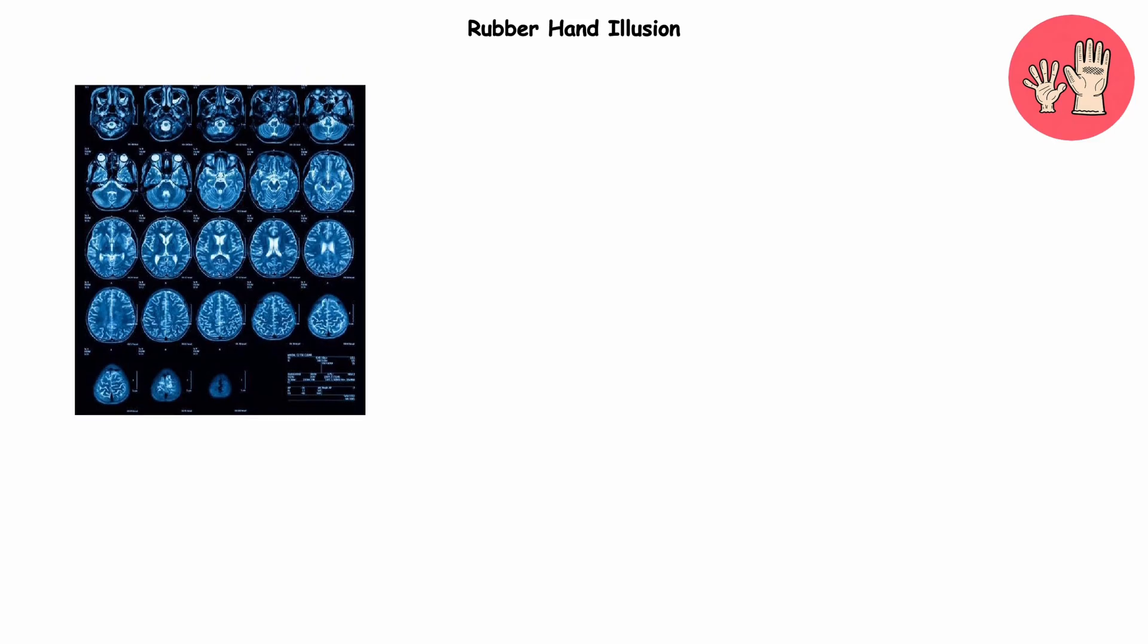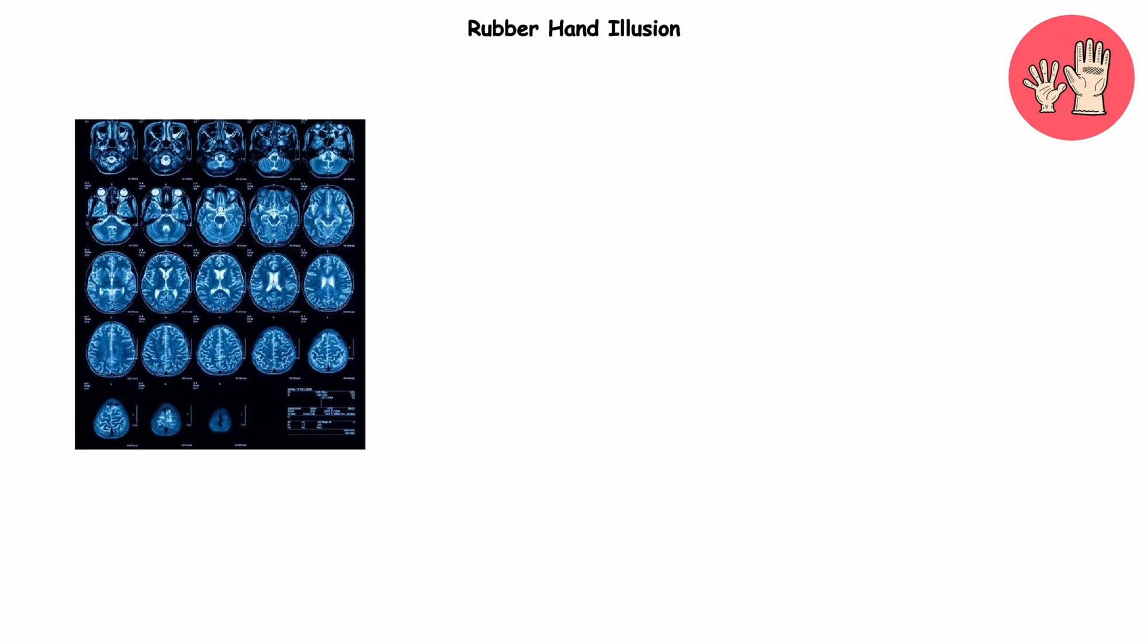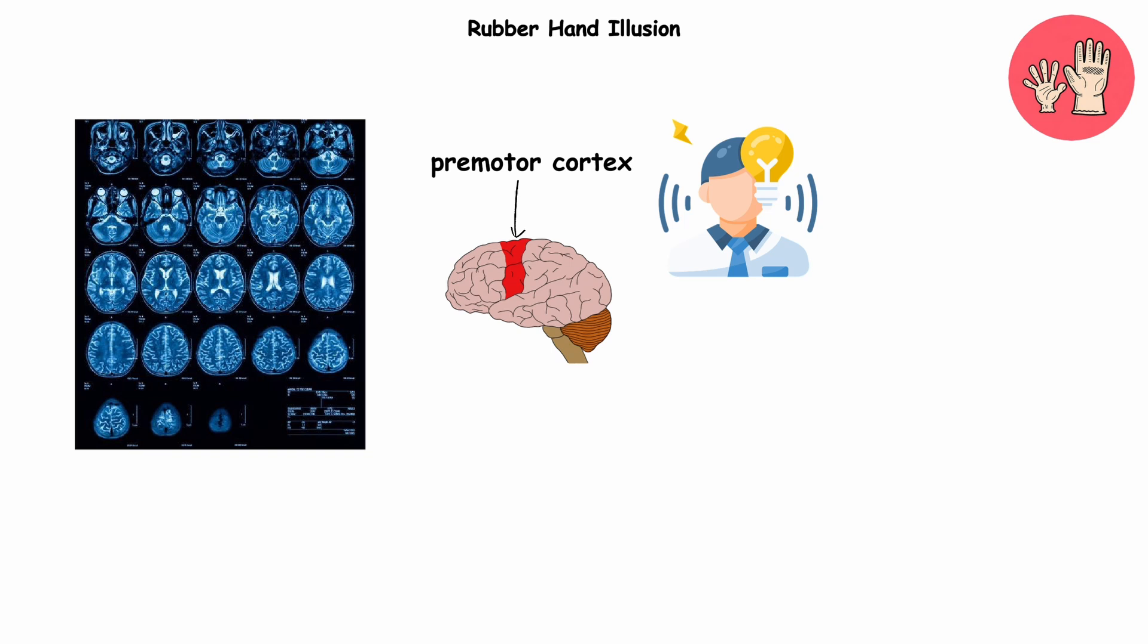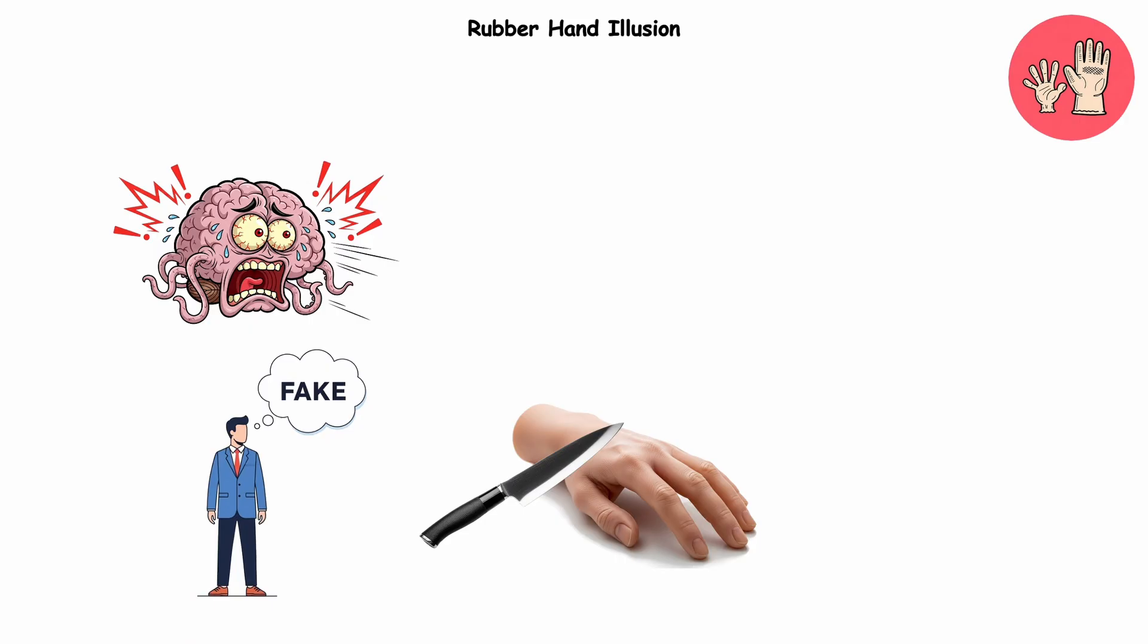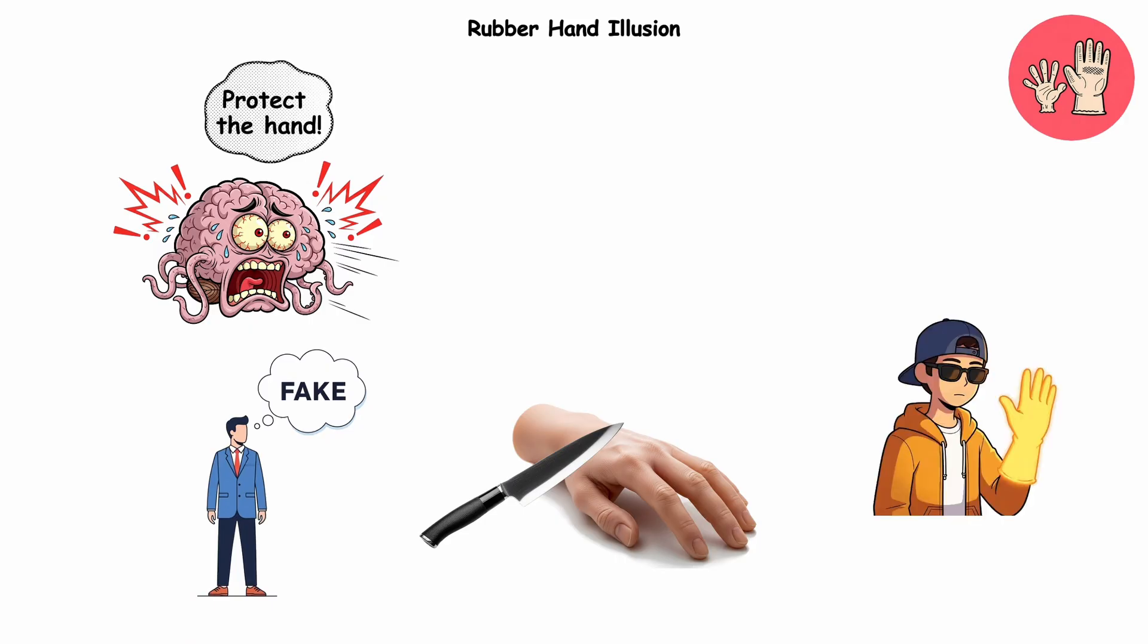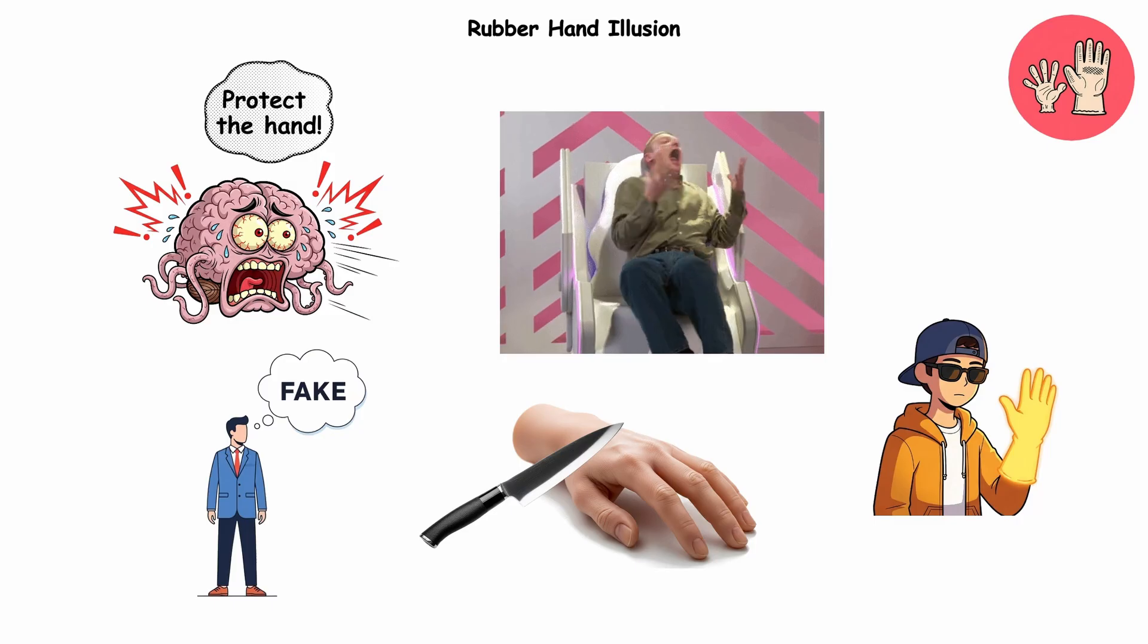Scans even show activity in regions like the premotor cortex, which handles body awareness. And what's more, if you wave a knife near that rubber hand, people flinch. The body knows it's fake, but the brain screams protect the hand. The rubber hand illusion is basically your nervous system playing VR with no headset required.